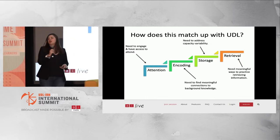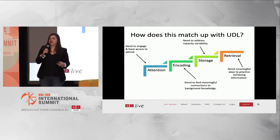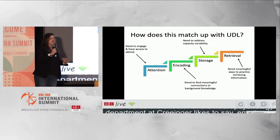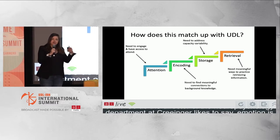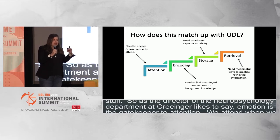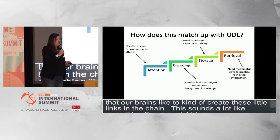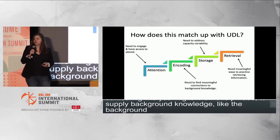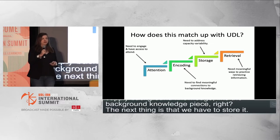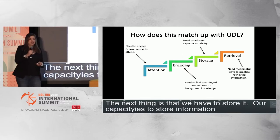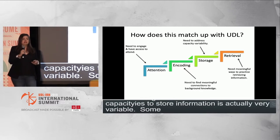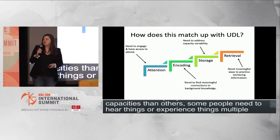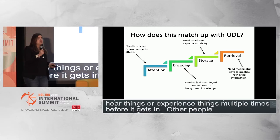With encoding, we know you have to connect things to other things you know — our brains create these little links in a chain. It sounds a lot like something you might know: supplying background knowledge. And then we have to store it. Our capacities to store information are actually very variable. Some people have more limited capacities than others; some need to hear or experience things multiple times before it gets in, while others can remember it right away. That's a piece of variability we need to consider when talking about learner variability.